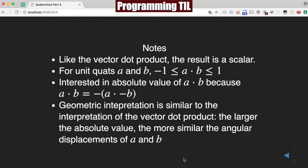And the geometric interpretation is similar to the vector dot product. The larger the absolute value, the more similar the angular displacements of a and b.